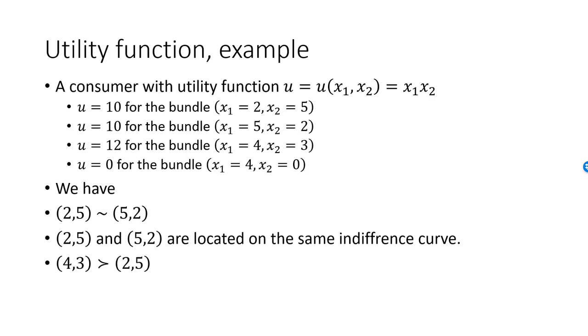Since she received 12 units of utility for the (4,3) bundle, she strictly prefers this bundle to the (2,5) bundle. In terms of weak preferences, (4,3) is weakly preferred to (2,5), but you can also say that the (2,5) bundle is weakly preferred to the (5,2) bundle.